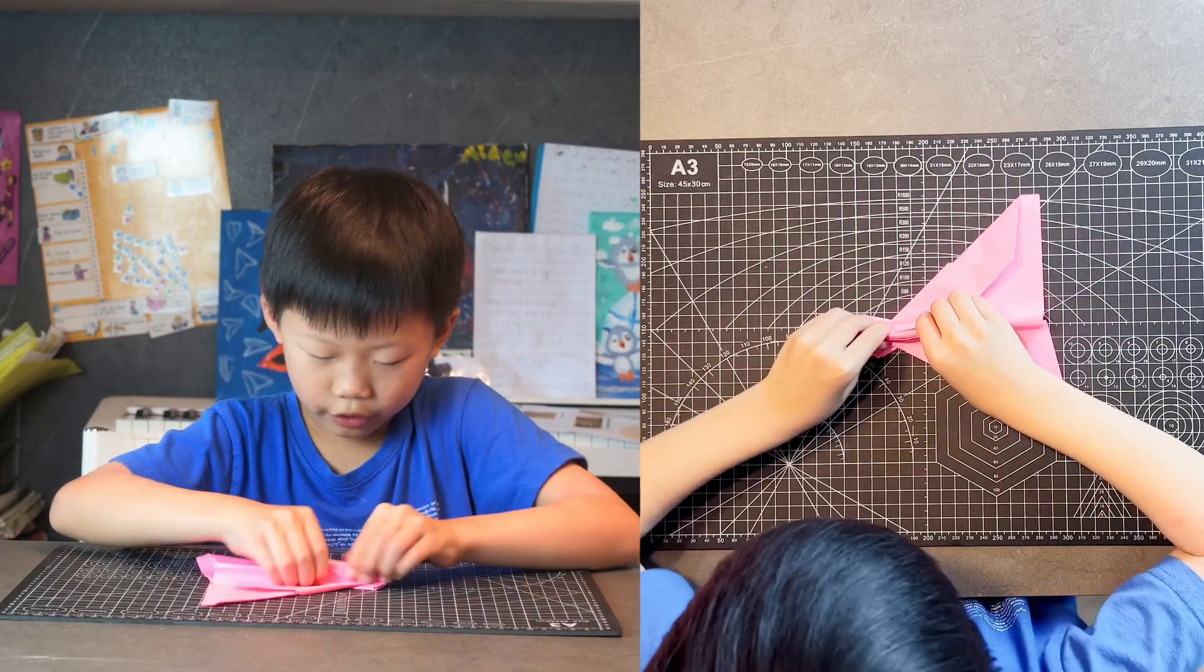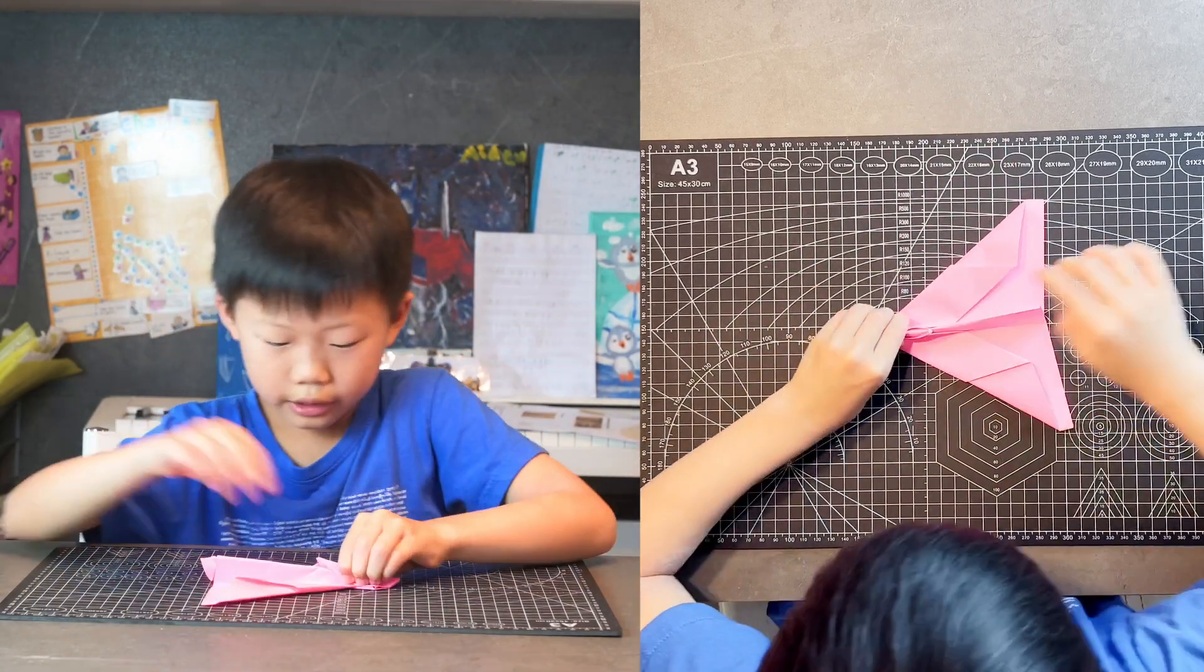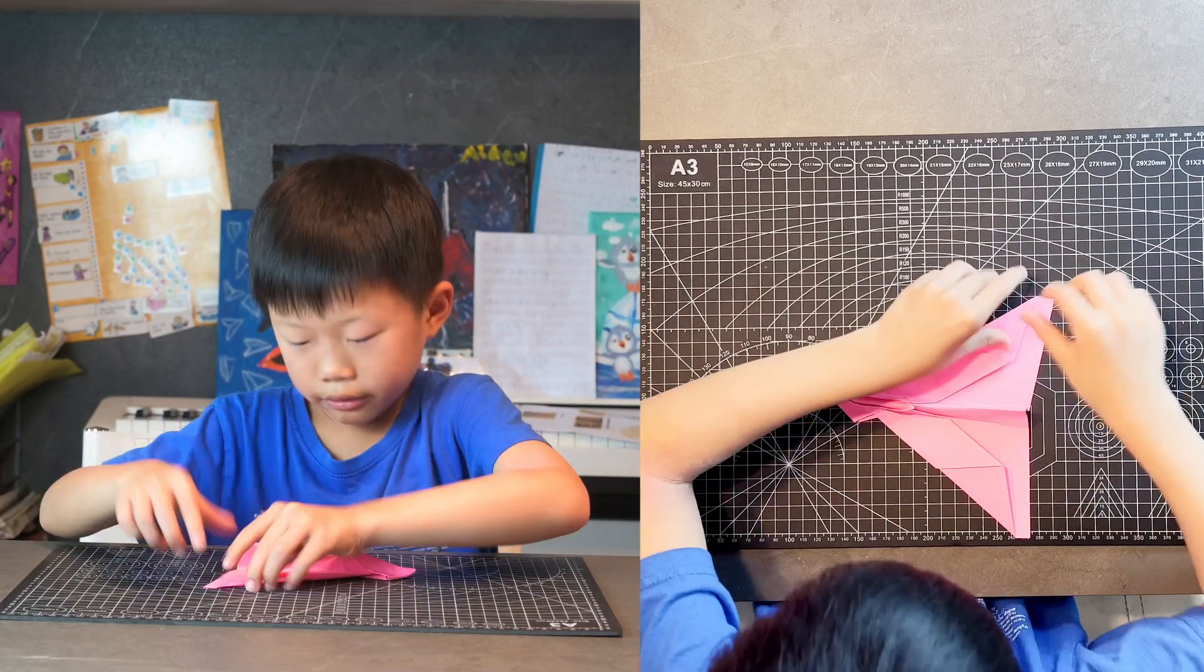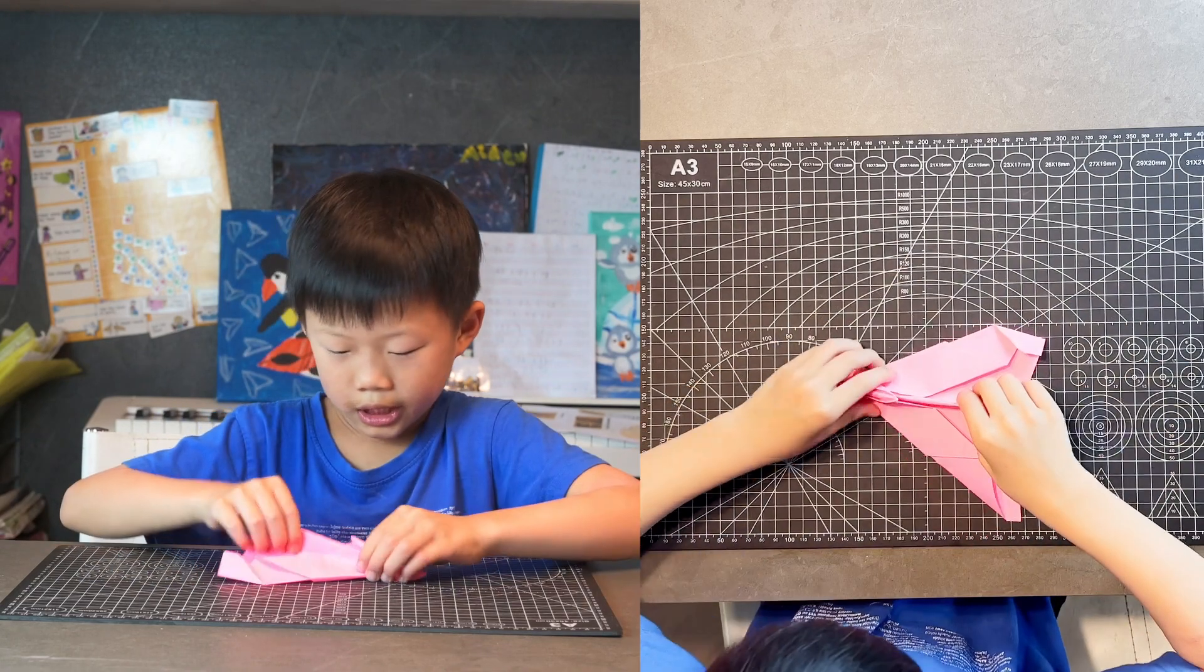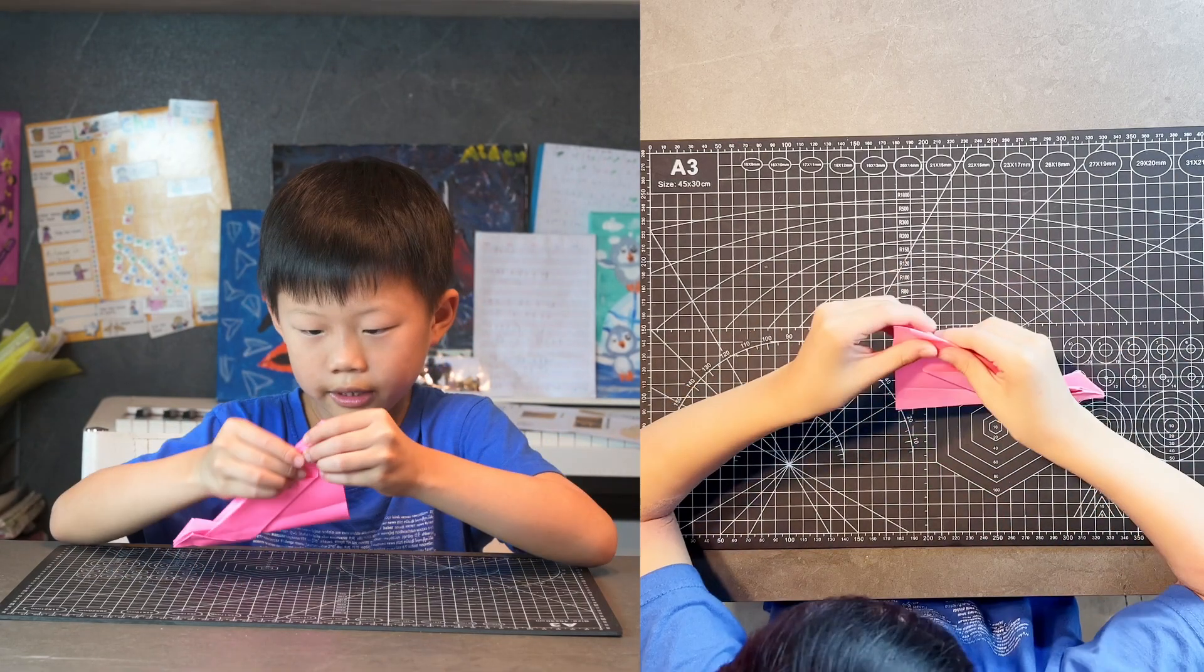And then do the same thing on your other side, which I like to do it like this. And then now you just need to fold two parallel winglets. After you fold it, fold it in half and then match it.